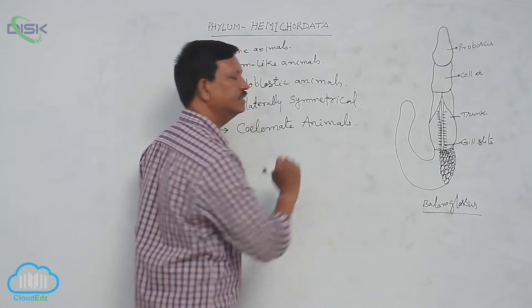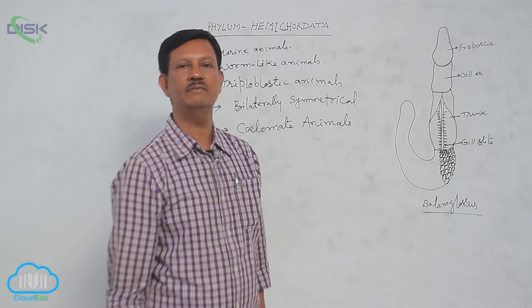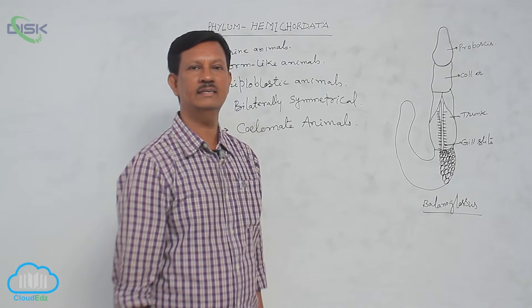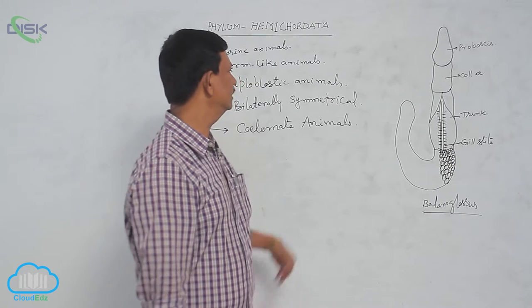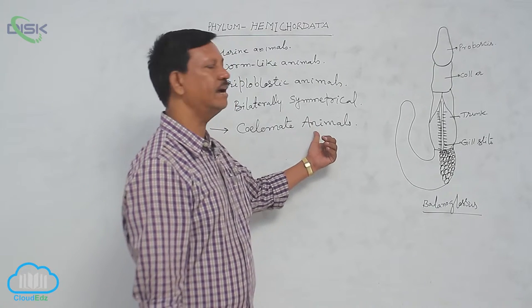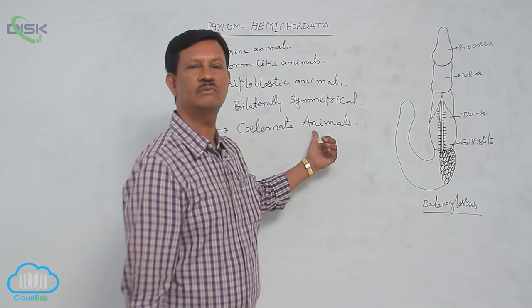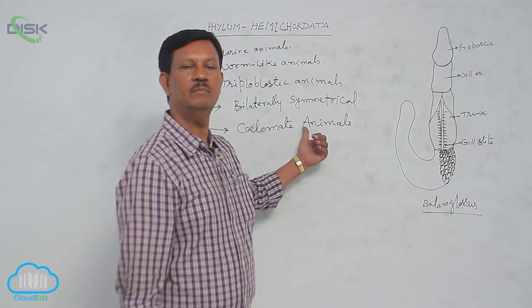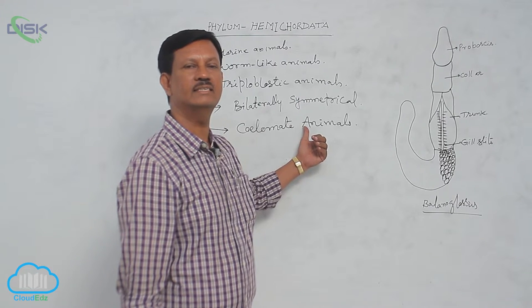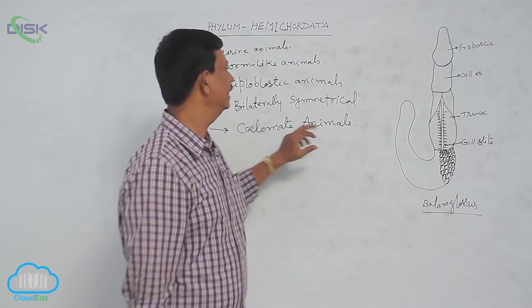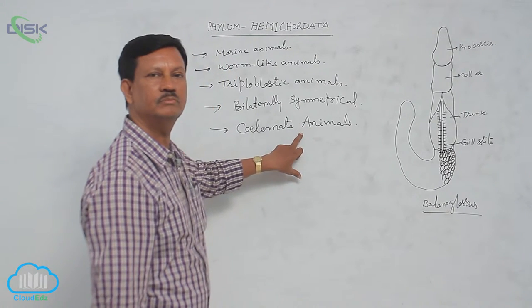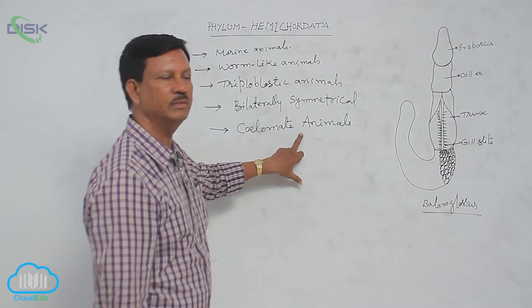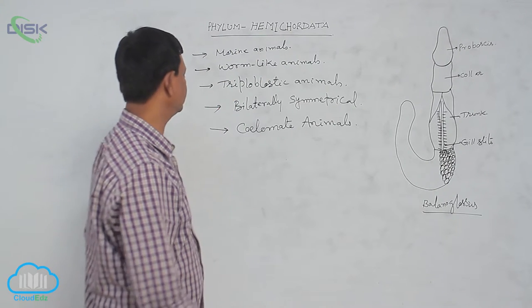Coelomate refers to the presence of a coelom, or body cavity, in between the body wall and the alimentary canal. This body cavity is derived from the alimentary canal; hence it is known as an enterocoelic coelom — a true coelom is present in hemichordates.